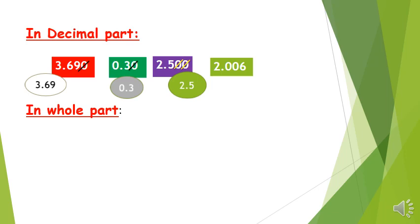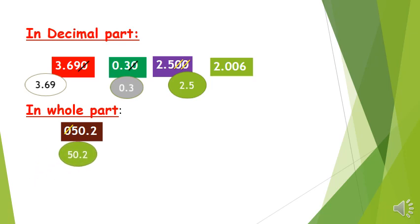Now, if we look at the zeros in the whole part — if the whole part starts or begins with a zero, we can cross this zero out because it has no value. For example, 050.2 is equal to 50.2.